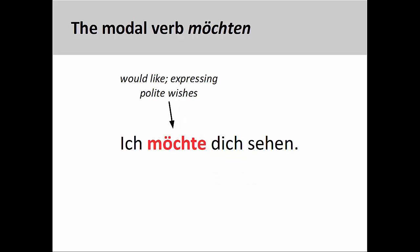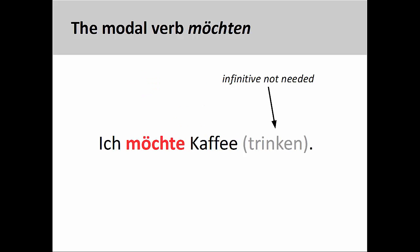The modal verb möchten, however, requires an infinitive and is used to express polite wishes: Ich möchte dich sehen — I would like to see you. In spoken German, if the infinitive can be guessed from the context in which the sentence is used, it can be left off: Ich möchte Kaffee — I would like coffee. In this case, the infinitive trinken, meaning 'to drink,' is understood from the context.